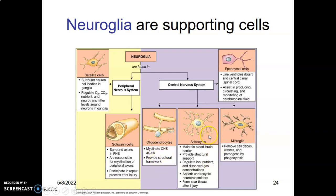Another glial cell in the CNS is the astrocytes. Astrocytes maintain the blood-brain barrier. The blood-brain barrier is a barrier that protects the brain from harmful substances in the blood. If your blood has some toxins, these toxins cannot get to the brain because of the blood-brain barrier. It is a selective barrier formed by capillary endothelial cells lying on the basement membrane and the foot processes of astrocytes.